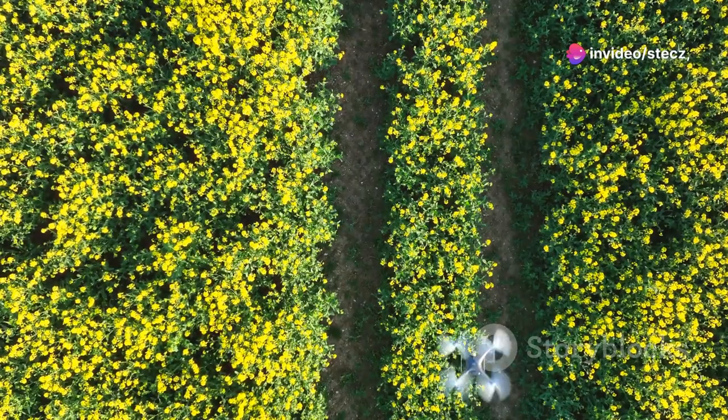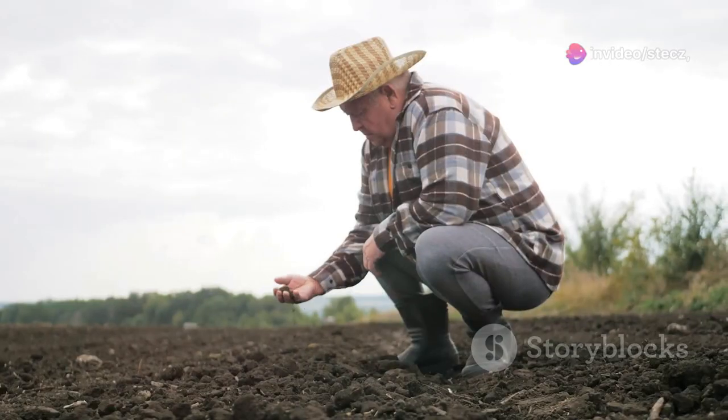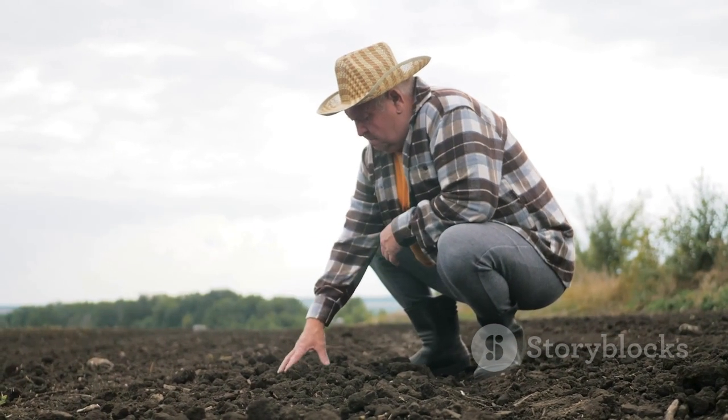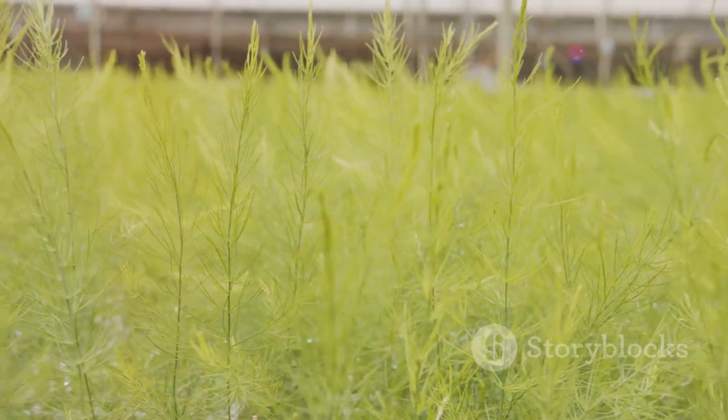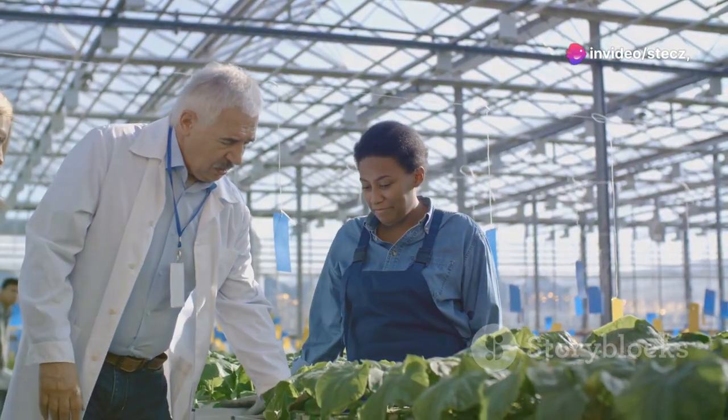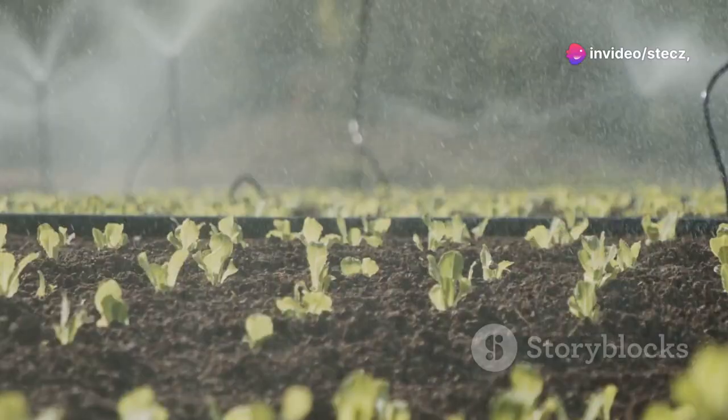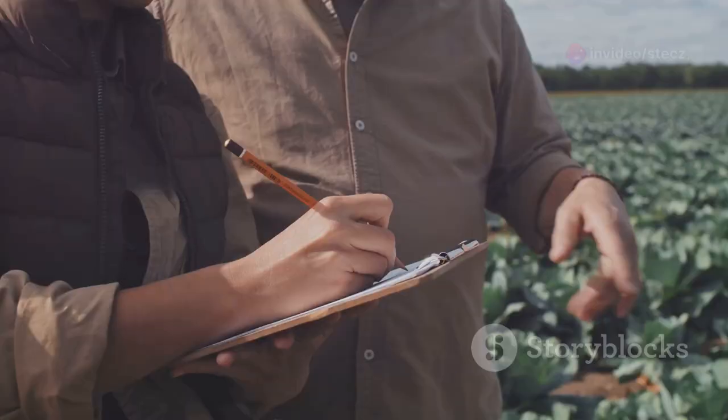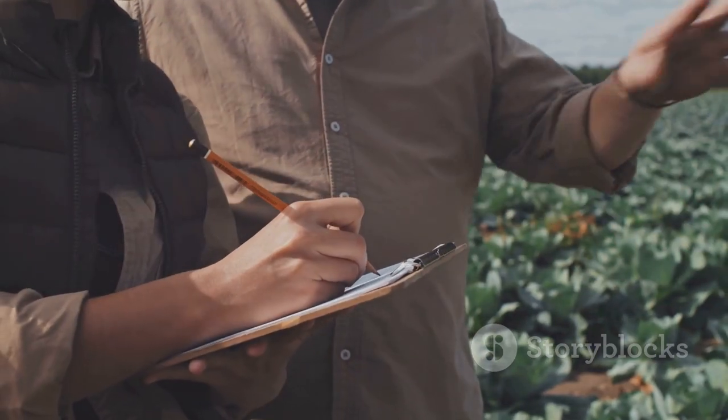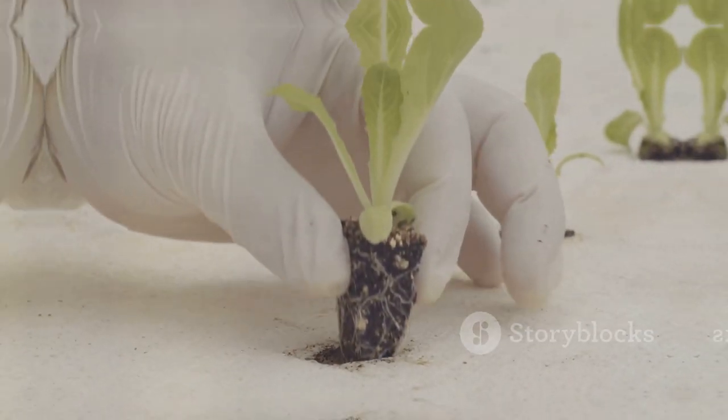Precision agriculture, guided by scientific insights, allows us to tailor fertilizer applications to the specific needs of each crop and soil type. Exploring alternative sources of nitrogen, such as nitrogen-fixing cover crops and biofertilizers, can reduce our dependence on energy-intensive synthetic fertilizers. By embracing these sustainable practices, we can nourish our planet while nourishing ourselves.